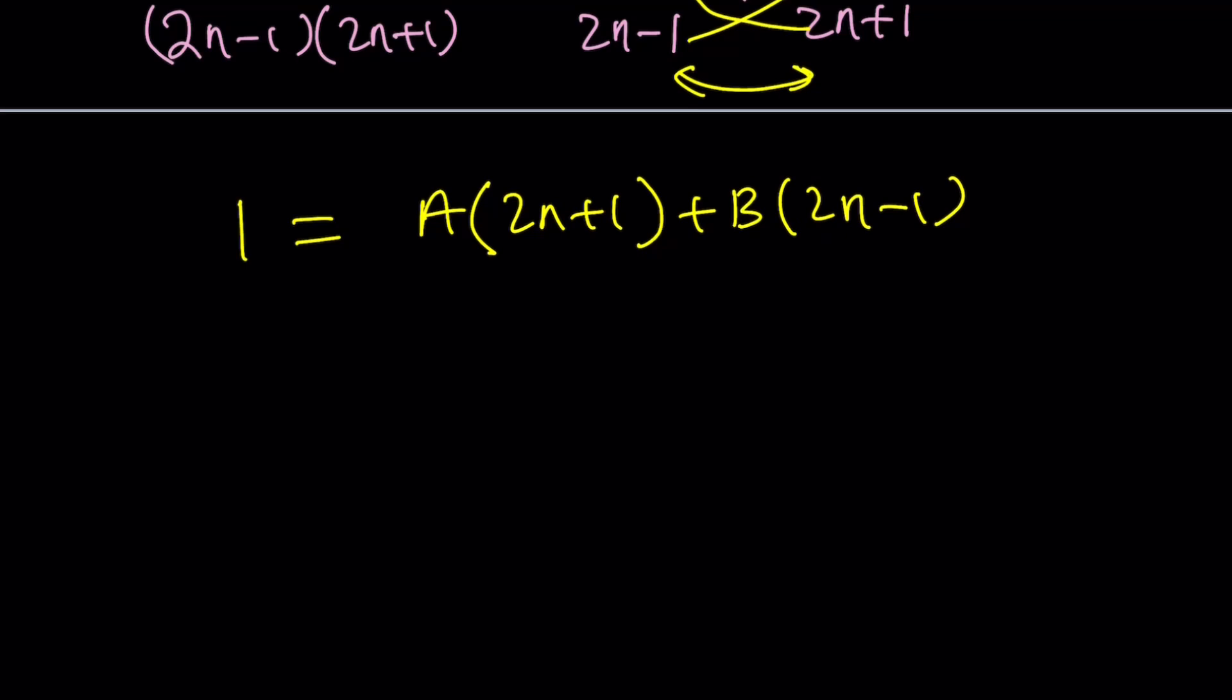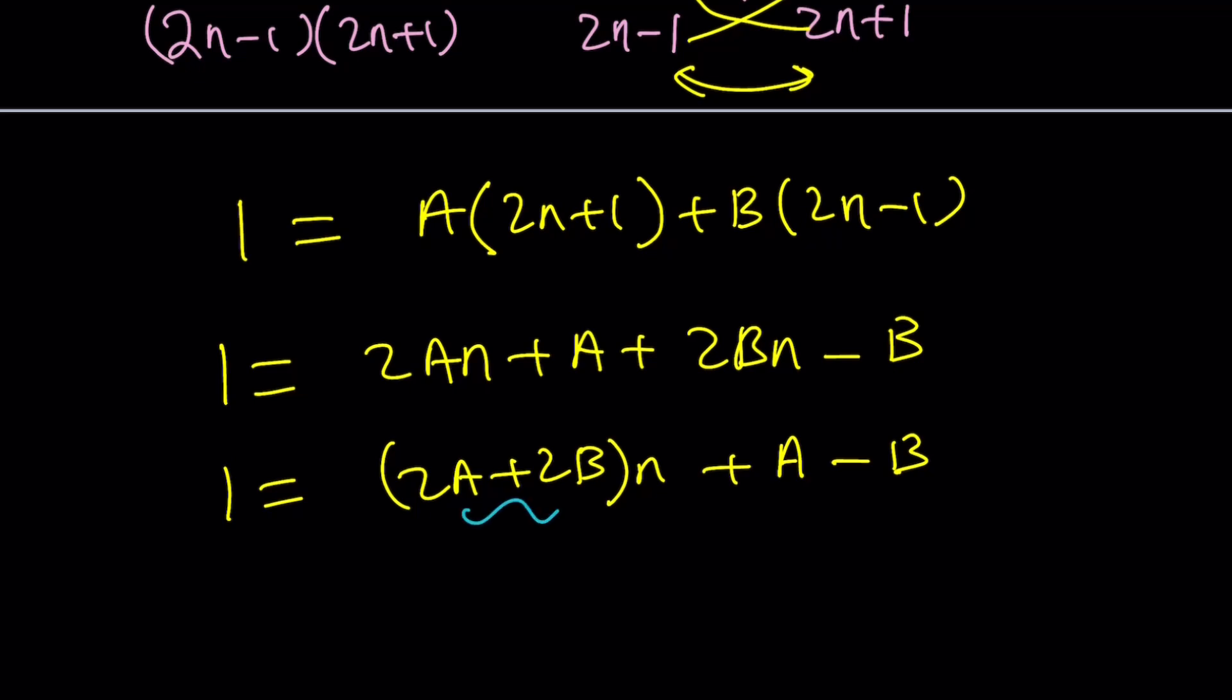I'm going to go with the first method and distribute. 2an plus a, plus 2bn, and it's been a while, right? Now we can write this as 2a plus 2b as the coefficient of n, and then constant term will be a minus b. Notice that on the right-hand side we have n, but we shouldn't because there's no n on the left, which means the coefficient of n should be 0. It needs to vanish, which means disappear. And this equals 1. It's a system.